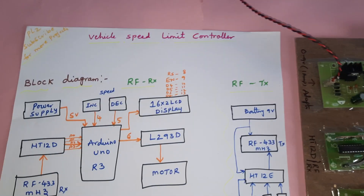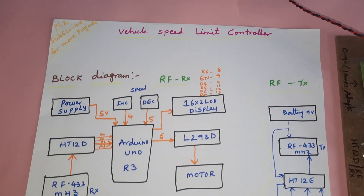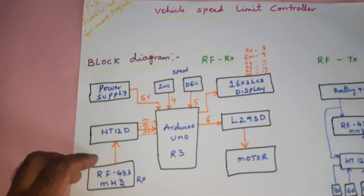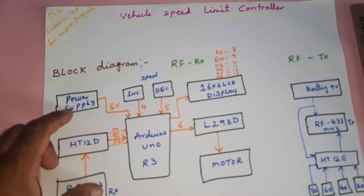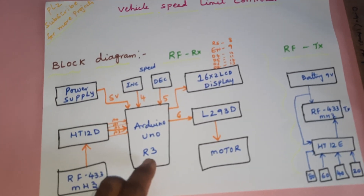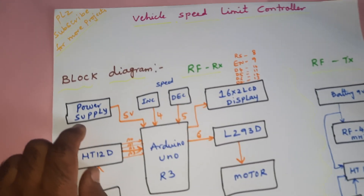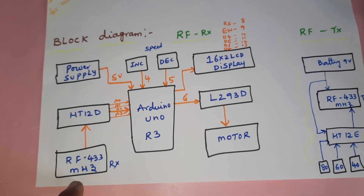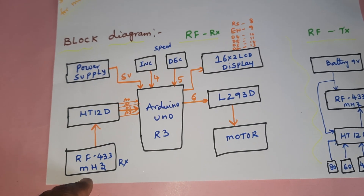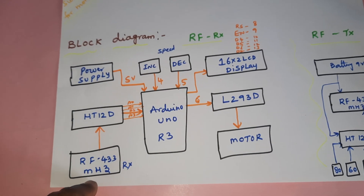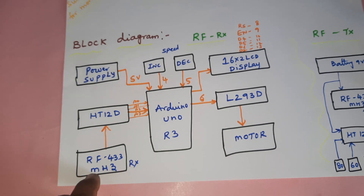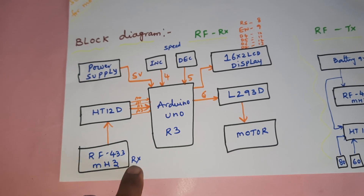The project title is 'Intelligent Vehicle Speed Limit Controller.' In this project, we are using an Arduino Uno R3 board, one 5-volt power supply module, and an RF receiver module with 433 MHz frequency.